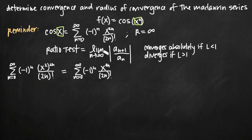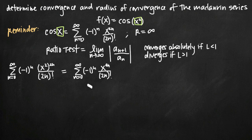The ratio test tells us that when we take the limit as n goes to infinity of the absolute value of the series with n+1 plugged in, divided by the series a_n, we get some value L. If L is less than 1, the series converges absolutely. If L is greater than 1, the series diverges. So we're going to use the ratio test here.